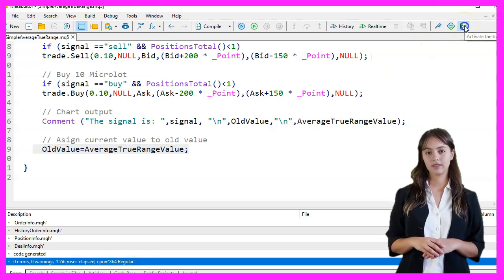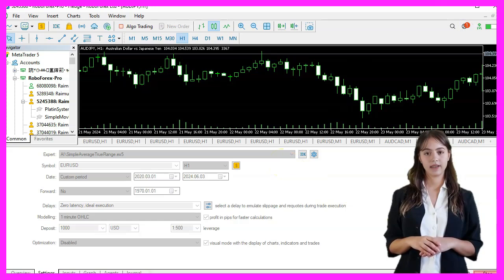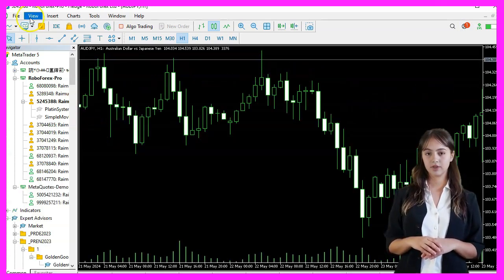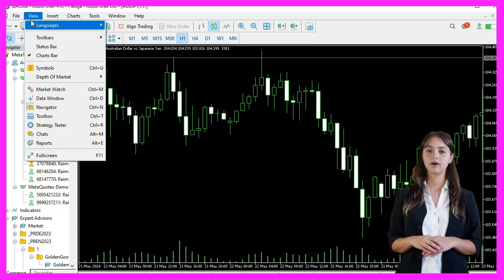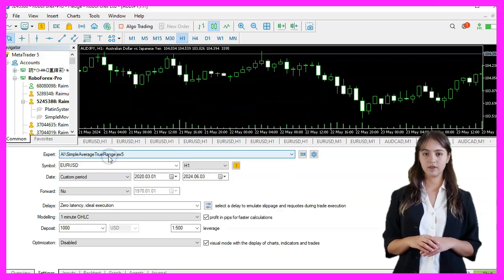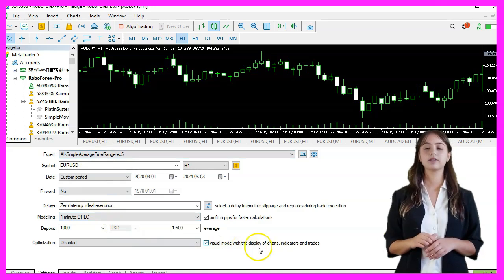If the compilation works, we go back to MetaTrader by pressing F4 or clicking on the icon. Back in MetaTrader, we press CTRL and R to start the strategy tester, pick the expert advisor that we have just created, enable the visual mode, and start a strategy test.